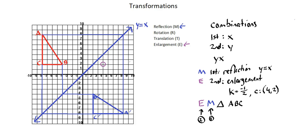In evaluating B prime, B prime to the center is a move up of 6 and right of 2. One-half of the move right of 2 is a further move right of 1, and one-half of the move of 6 up is a move up of 3. So B double prime is at (5, negative 5).